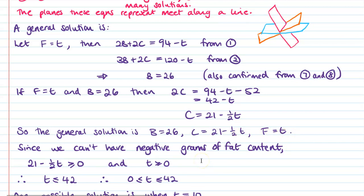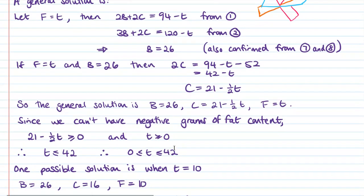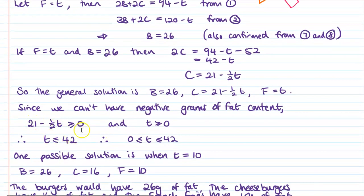Now, since we can't have negative grams of fat, there must be some restrictions on what values T can be. So all of these have to be above zero. So we set them equal to zero. Now, 26 is always going to be 26, so we don't need to do anything with that one. But 21 minus half T, that's got to be greater than or equal to zero. And for the French fries, T must be greater than or equal to zero. So if we combine those two things, we can rearrange this one. T's got to be less than or equal to 42 and T's got to be bigger than zero. Therefore, our final thing putting both of those things together is that T must be between zero and 42.